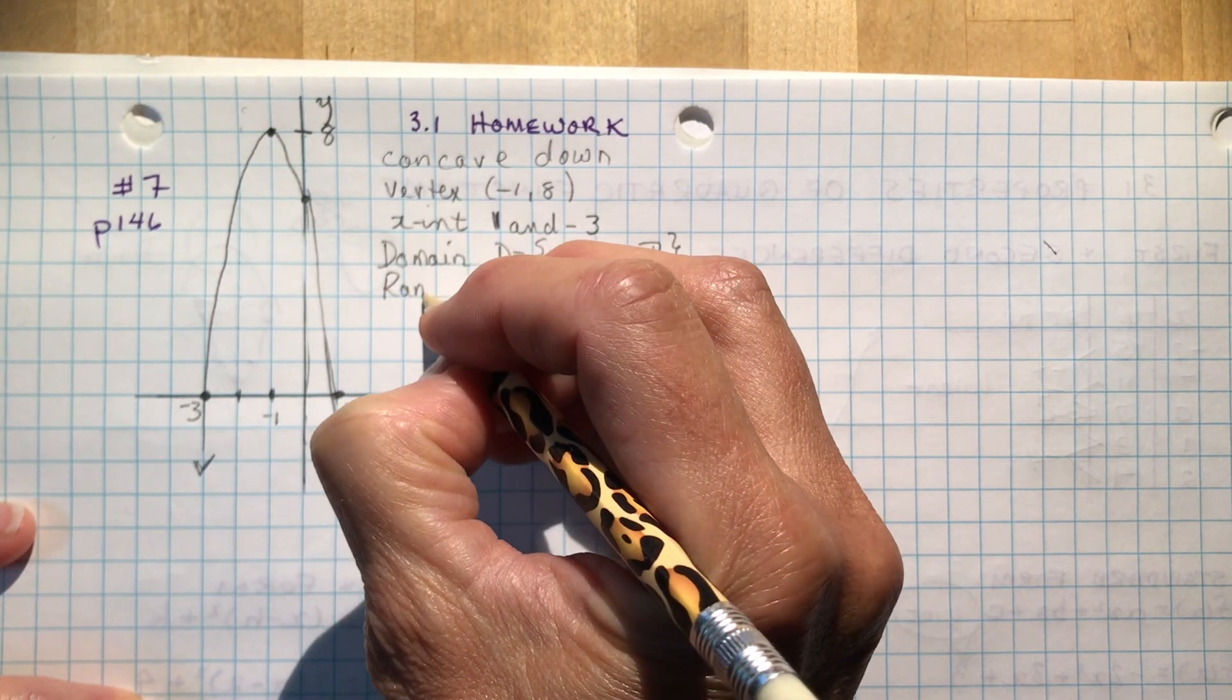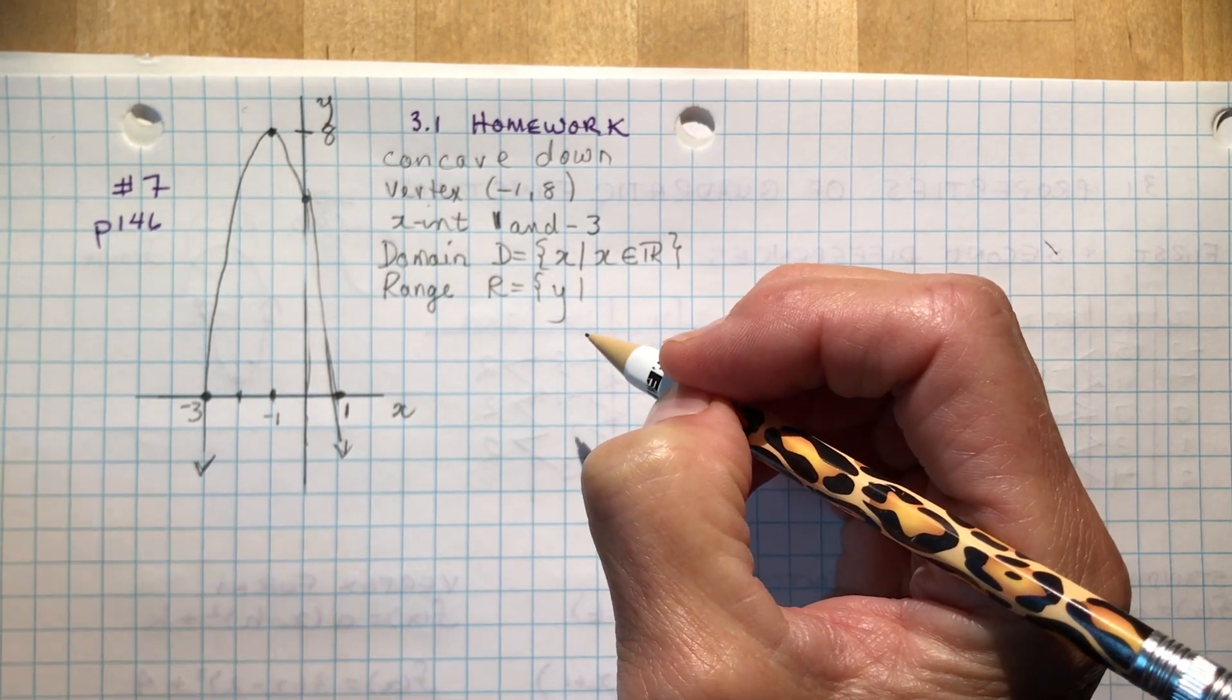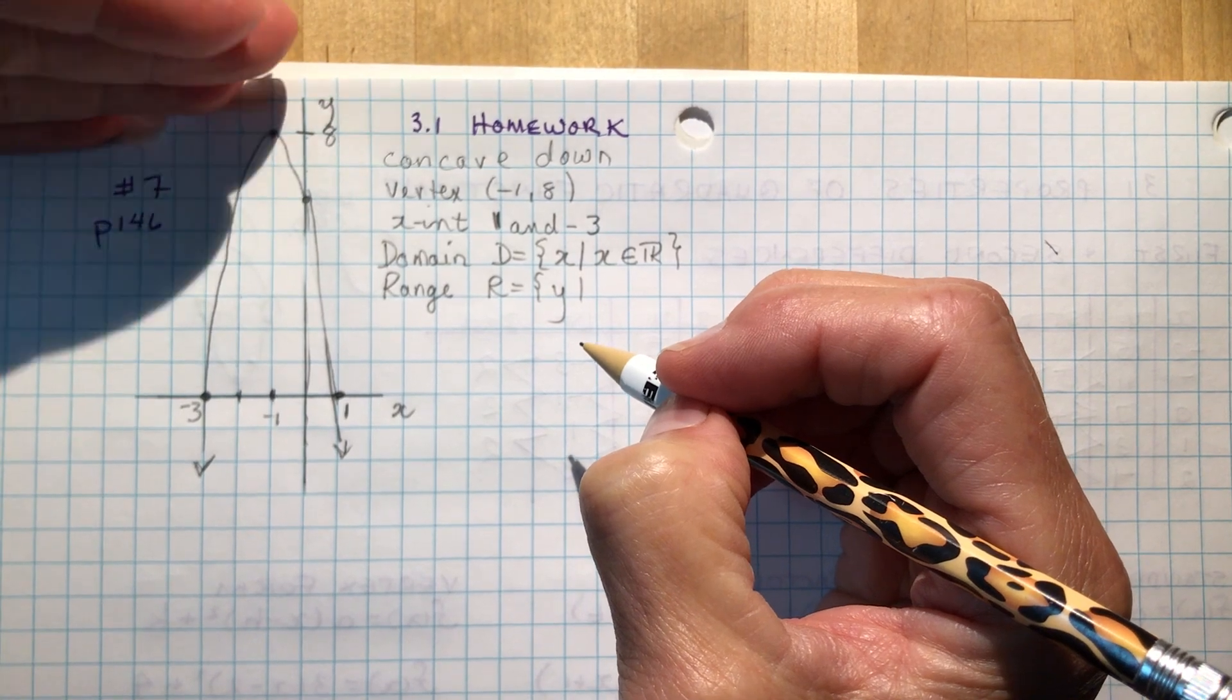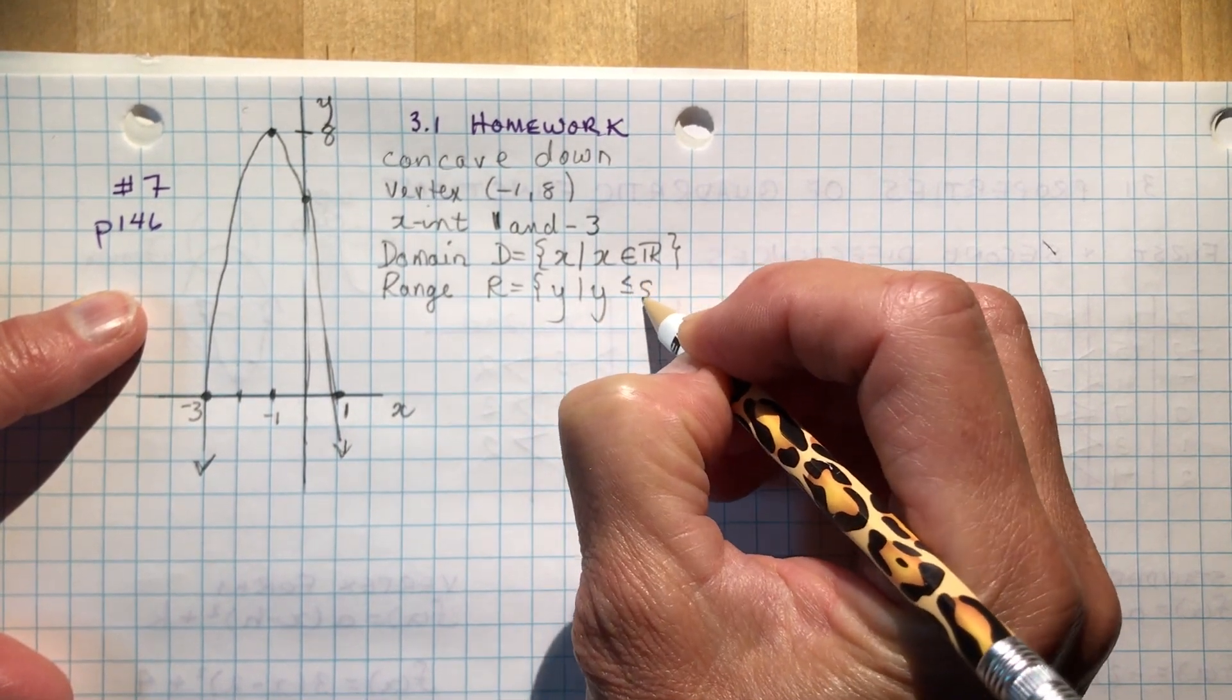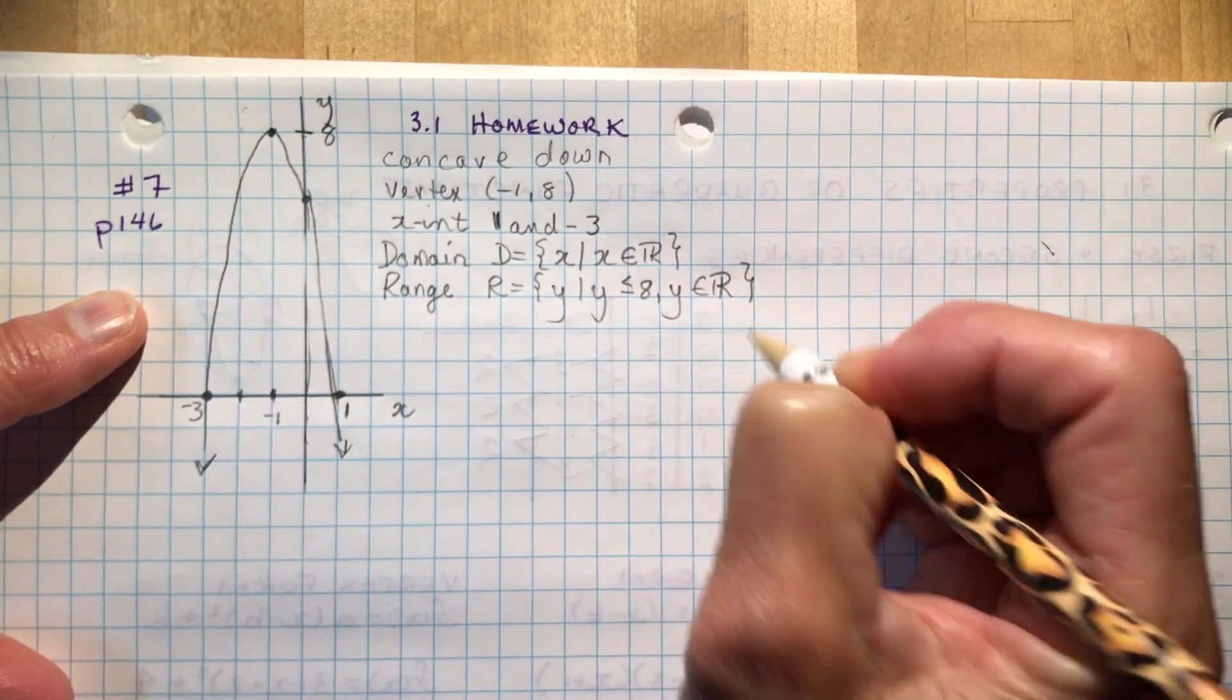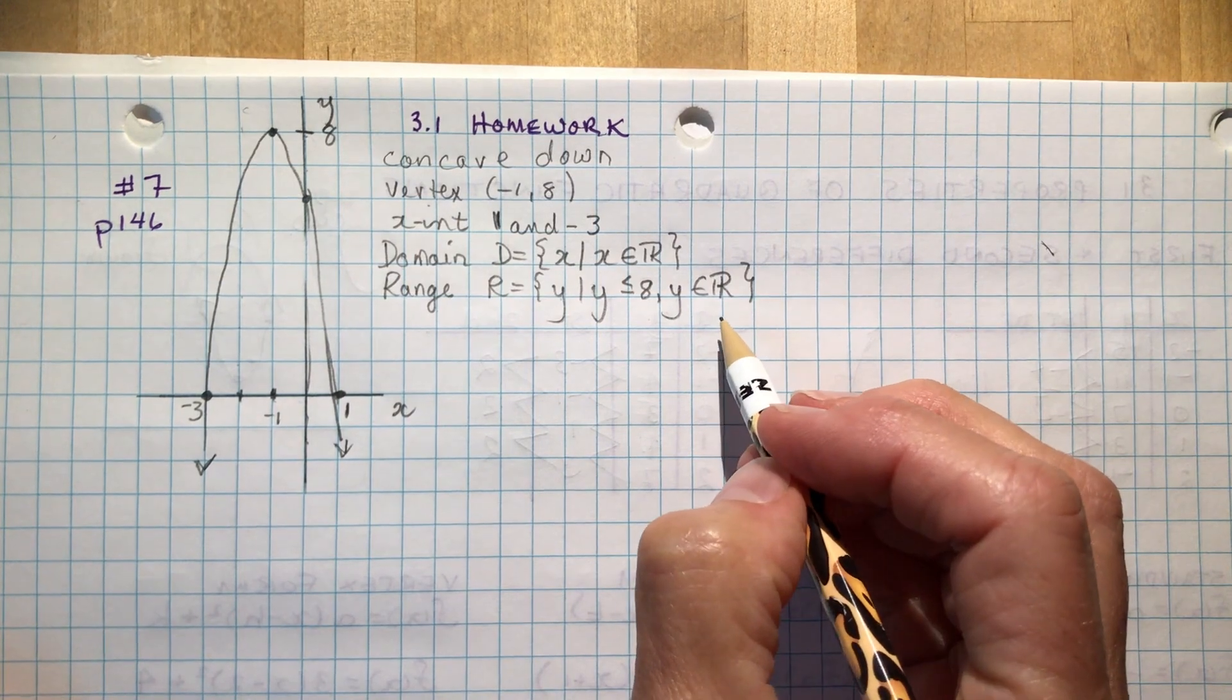And the range are... Now remember, when you're doing the range, the range is where does the function go? What is the highest point? And it goes down from there. So it's going to be y. Y is less than or equal to 8. And y is an element of real numbers. Less than or equal to 8. That's the highest point. And it goes down from there. Sorry about the phone call. That's the range.